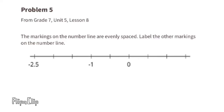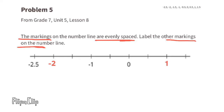Problem 5 from Unit 5 Lesson 8: the markings on the number line are evenly spaced — label the other markings. Starting at 0, we move 2 dashes to the left to get to negative 1, so every 2 dashes is a whole number. Two dashes right of 0 is positive 1, two dashes left is negative 1, four dashes left is negative 2. The dashes between whole numbers represent half units: one dash right of 0 is 0.5, one dash left is negative 0.5.